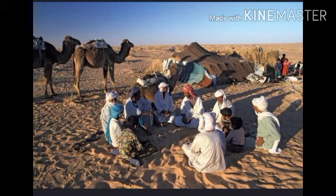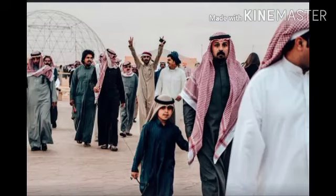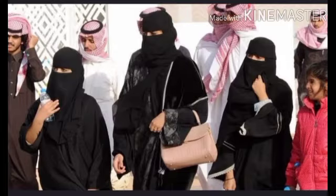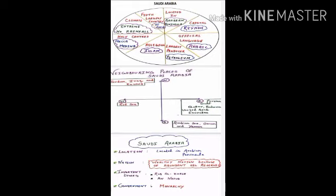The lifestyle of Bedouins is also changing. More and more of them are beginning to settle down in one place and are using jeeps and cars for moving around. The men and boys in Saudi Arabia wear traditional loose-fitting white robes called thob. In cities, people mostly wear western clothes. Women wear a long black dress called the abaya. Saudi Arabia is an Islamic state. The national language of Saudi Arabia is Arabic, and English is also spoken by many people living here.